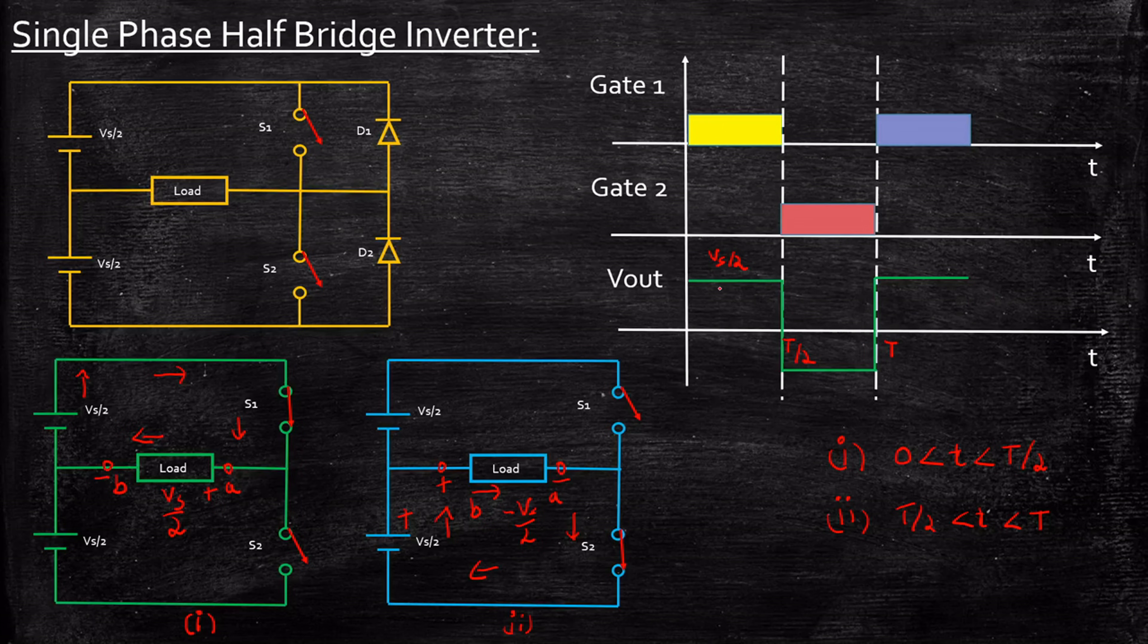So basically, you're getting a waveform which is like a square AC waveform. This is where you call this an AC waveform. You had a DC power supply and you're converting it into AC—only thing is, it's a square wave. So these inverters are called square wave inverters.